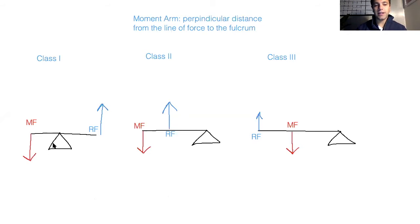So if we look at a class one lever, we're going to draw this imaginary line from this red line here. And this red arrow is representing the line of direction for the muscle force. So imagine this line is acting straight through here. It's a perpendicular distance from this line of force to the fulcrum. So this distance here that I just drew, that is the moment arm of the muscle force.